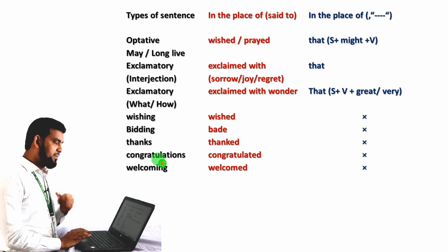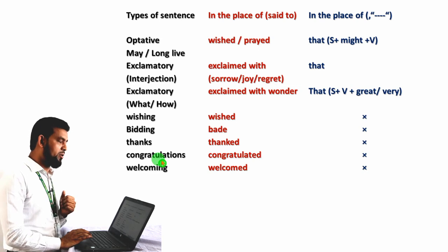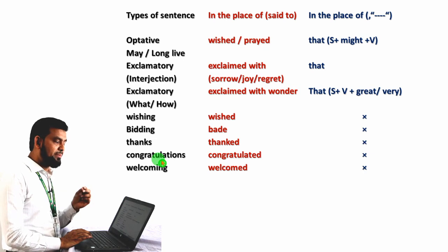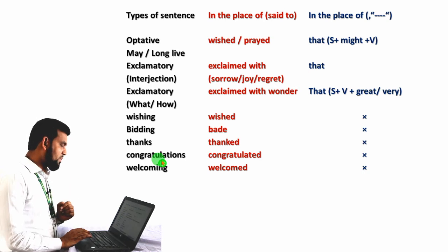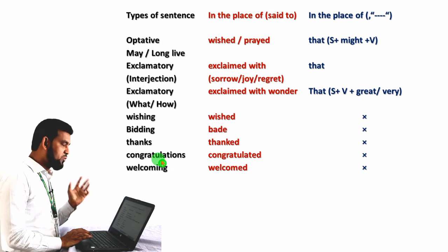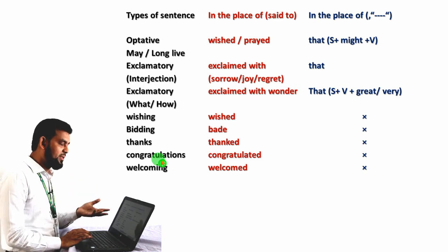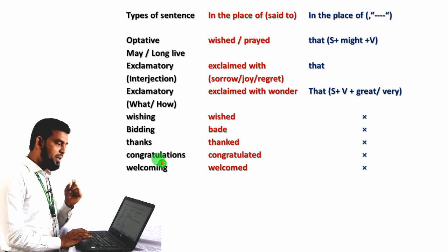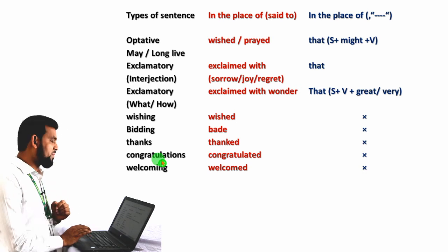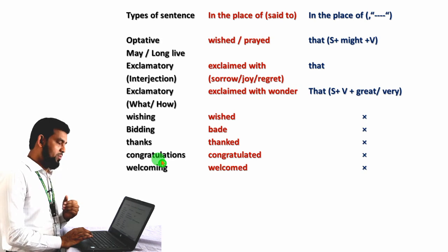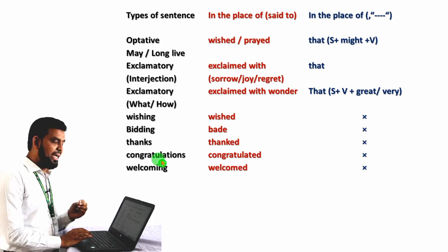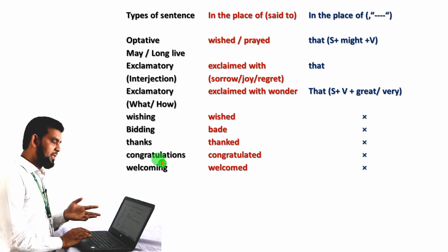If the sentence is an optative sentence — meaning it starts with 'may' or 'long live' — we have to use 'wished' or 'prayed' in place of 'said to', and use 'that' plus subject plus 'might' plus verb in place of the inverted comma. If the sentence is exclamatory and starts with an interjection, we have to use 'exclaimed with sorrow', 'joy', or 'regret' according to the meaning in place of 'said to', and use 'that' in place of the inverted comma. If the sentence starts with 'what' or 'how', we use 'exclaimed with wonder', and we must use 'that' plus subject plus 'great' or 'very' in place of the inverted comma.